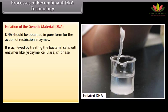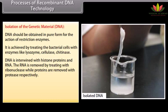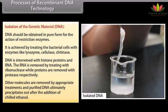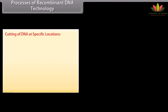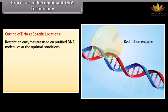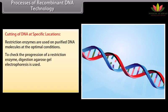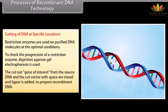DNA is intertwined with histone proteins and RNA. The RNA is removed by treating with ribonuclease, while proteins are removed with protease. Other molecules are removed by appropriate treatments, and purified DNA ultimately precipitates out after the addition of chilled ethanol. Cutting of DNA at specific locations: restriction enzymes are used on purified DNA molecules under optimal conditions. To check the progression of restriction enzyme digestion, agarose gel electrophoresis is used. The cut-out gene of interest from the source DNA and the cut vector with space are mixed, and ligase is added to prepare recombinant DNA.